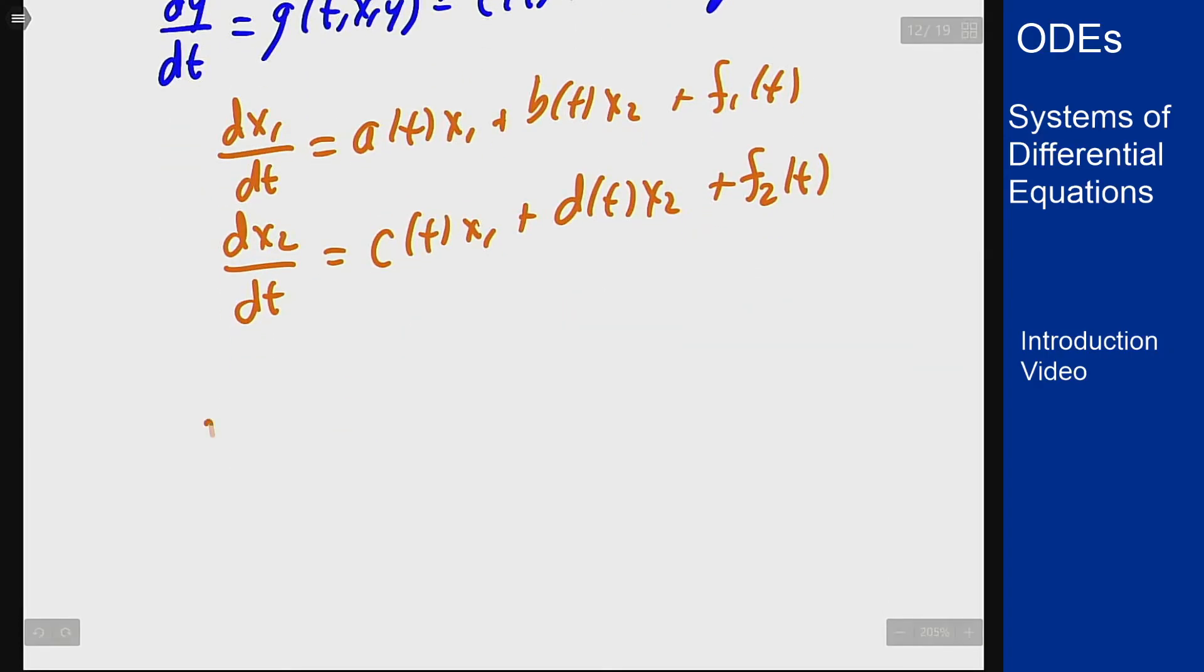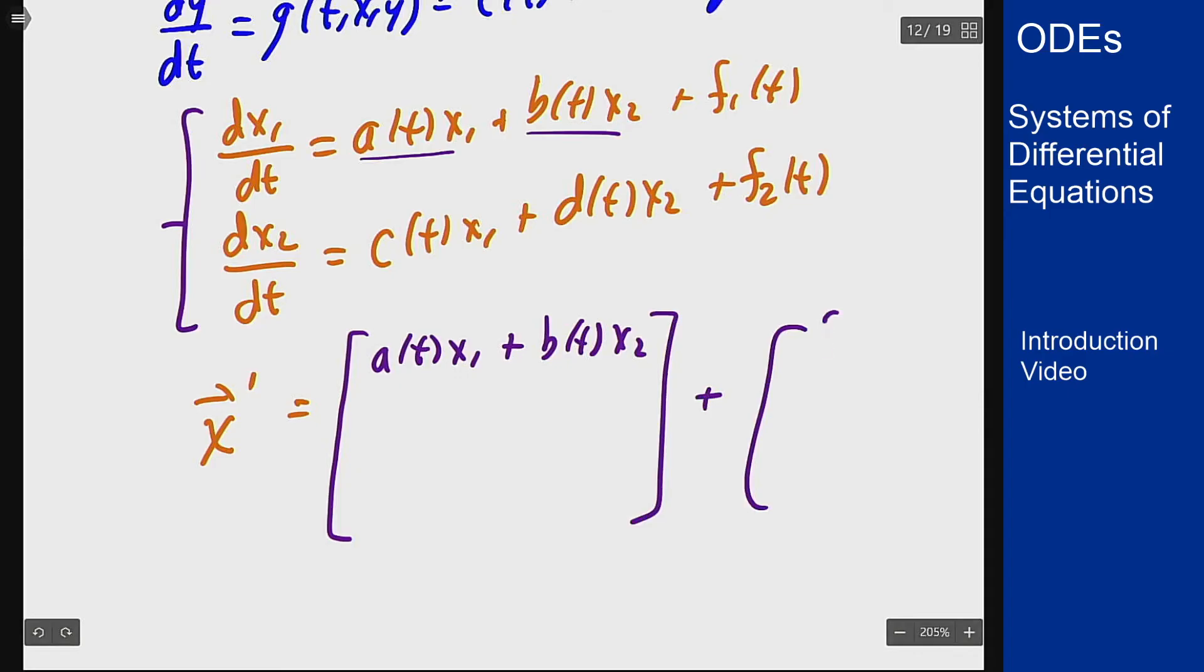This here is my vector x prime that's combining these two equations here. But I know the first component should be a of t x1 plus b of t x2, so let's write that as a vector: a of t x1 plus b of t x2. I'll leave that separate from the f1 of t that I'll sit over here because that doesn't depend on x at all. And the second row I will have c of t x1 plus d of t x2 and f2 of t.